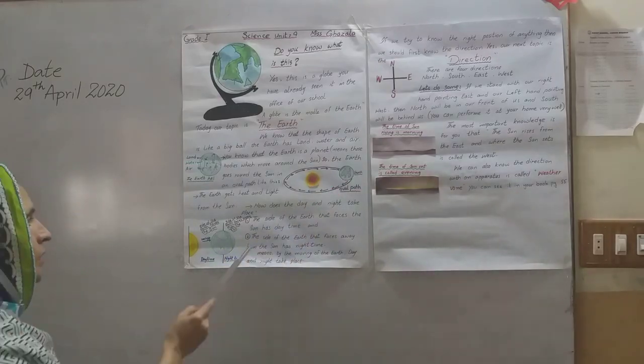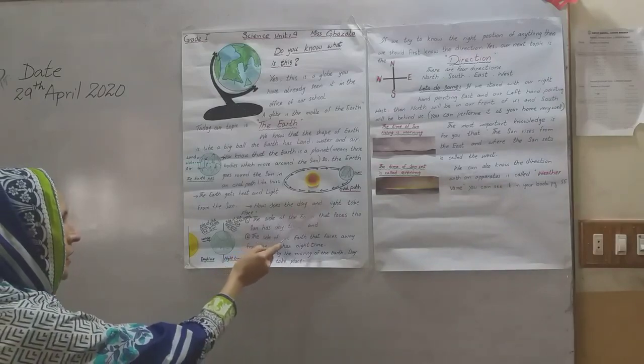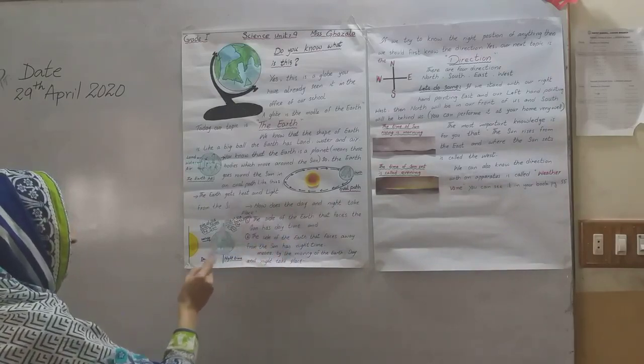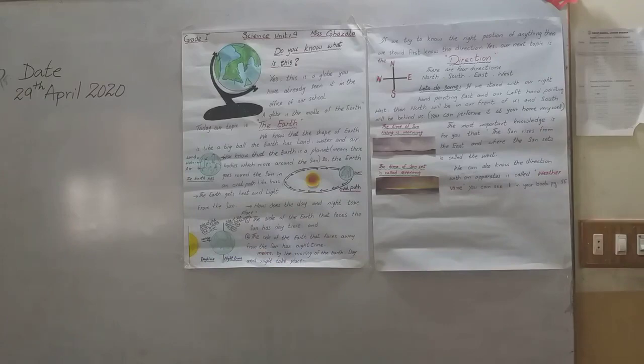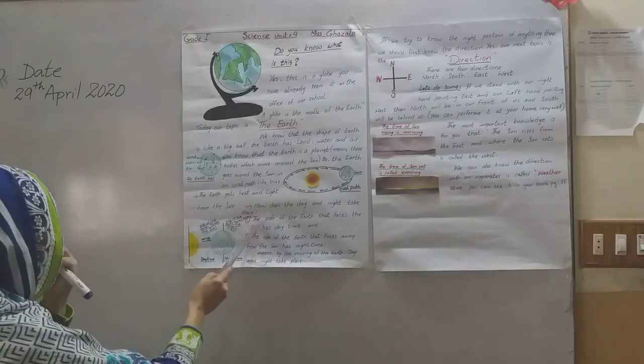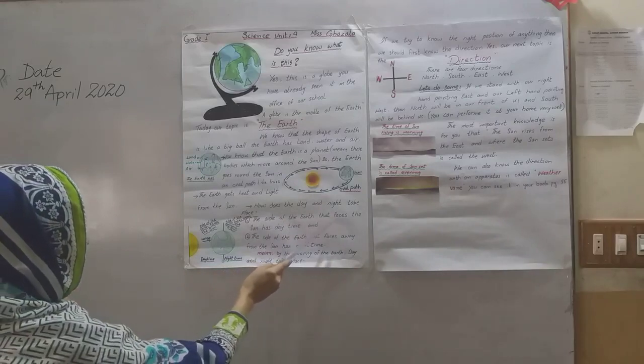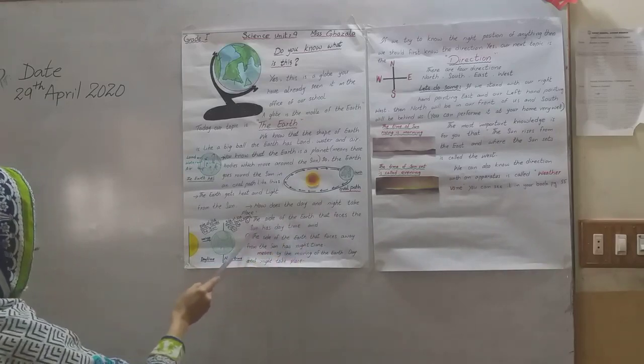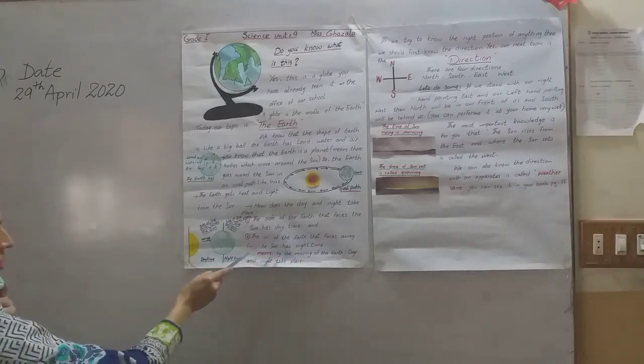How does the day and night take place? Number 1: The side of the earth that faces the sun has daytime.